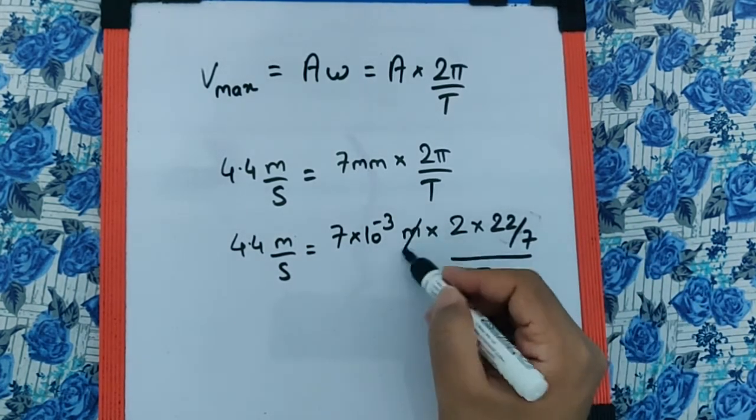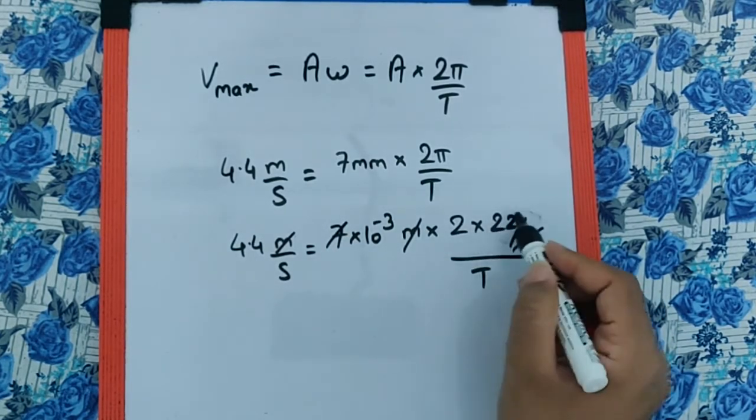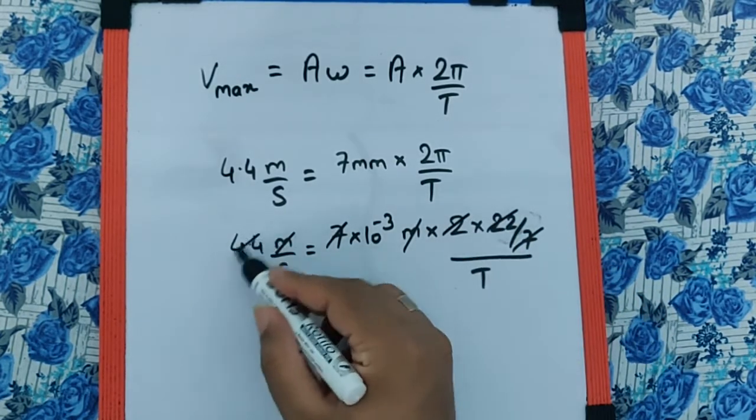The meter units cancel, the 7 cancels. We have 2×22 = 44. Since 44×0.1 = 4.4, T moves to the numerator.